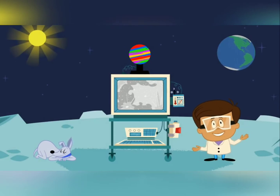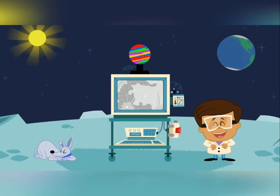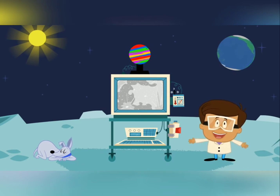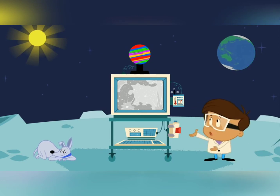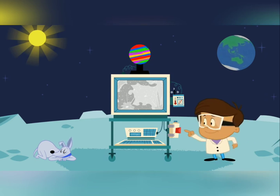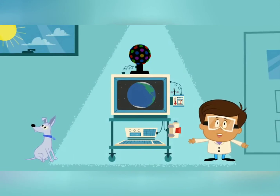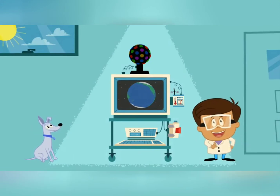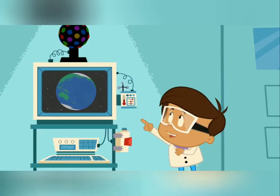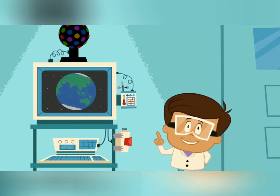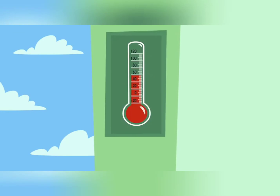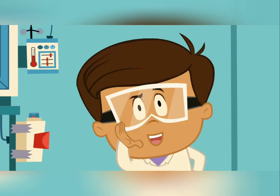Hey, it's me, Ivan. Guess where I am. It looks like I'm on the moon, but it's really just a picture made by my new invention, the Climate Finder. I'm actually here in my garage, where I love to build things. Remember my weather machine? It makes all kinds of weather, and we know what weather is — changes in the atmosphere, like clouds and temperature and precipitation. Remember?